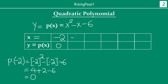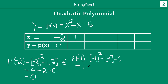At x equals minus 1, the value of the polynomial is (−1)² minus (−1) minus 6, which gives 1 plus 1 minus 6, equals minus 4. Now at x equals 0, substituting 0 gives y equals minus 6.